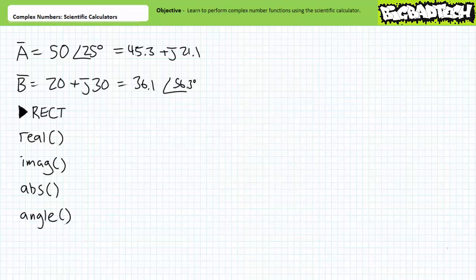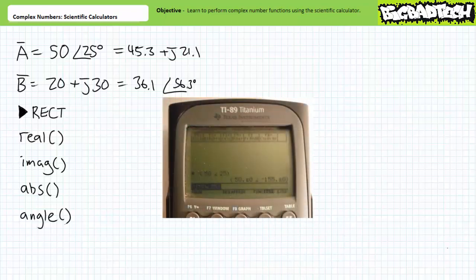Let's now examine negation and complex conjugation of complex numbers using the scientific calculator. To negate a complex number, one simply precedes the complex number of interest with a negative sign — not the minus key — or multiplies it by negative one. This is pretty easy for complex numbers expressed in polar format, since they need parentheses anyways. If I wanted to negate complex number A, I type the negative sign and then enter A as previously. When I press enter, the calculator returns 50 at an angle of negative 155 degrees, as one might expect. If illustrated, negative A would be the same size as A only pointed in the opposite direction.